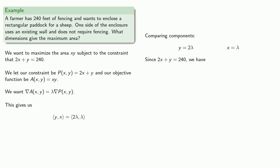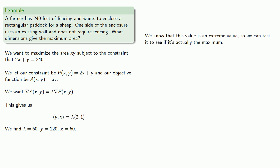So let's go ahead and take our constraint equation, we'll substitute x and y, and find a value of lambda. And since x and y are expressed in terms of lambda, we can then find x and y and get our solution. Again, we know that this value is an extreme value, so we can test to see if it's actually the maximum.